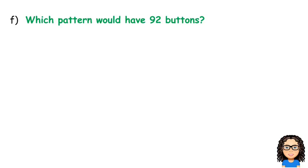One last question here. Which pattern would have 92 buttons? So, think about the 92 buttons. Is that B or n? And that is our number B. So, B is equal to 92. And we want to know what pattern. So, that means we're asking what is n. So, let's write down our equation.